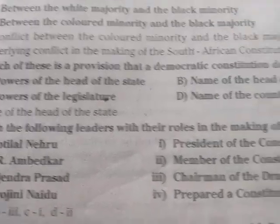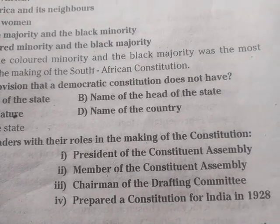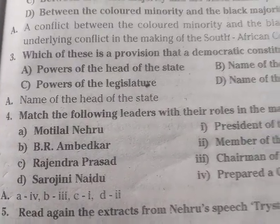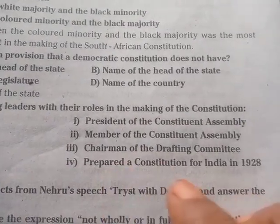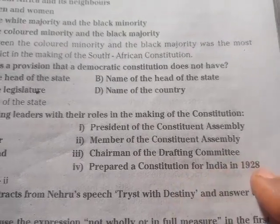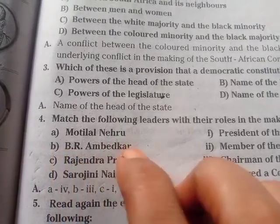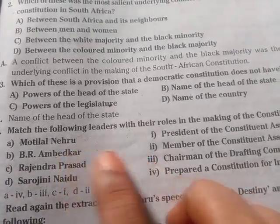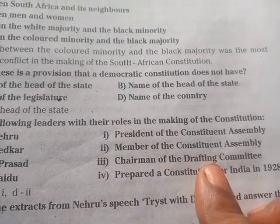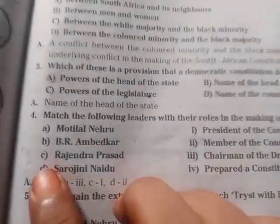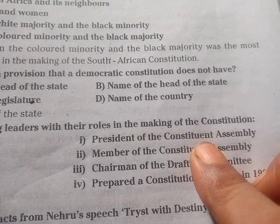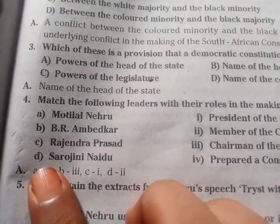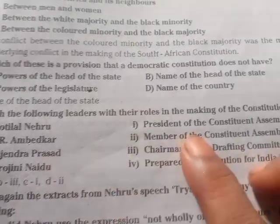Match the following leaders with their roles in the making of the constitution: A. Motilal Nehru — drafted a constitution for India in 1928. B. B.R. Ambedkar — Chairman of the Drafting Committee. C. Rajendra Prasad — President of the Constituent Assembly. D. Sarojini Naidu — Member of the Constituent Assembly.